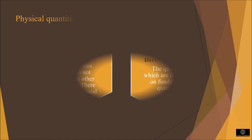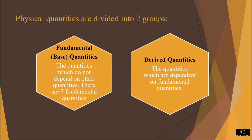Physical quantities are divided into two groups: fundamental quantities and derived quantities. The quantities which do not depend on any other quantities, or the quantities which can be measured by an instrument, are called fundamental or base quantities. There are seven fundamental quantities. The quantities which depend on fundamental quantities, or which can be measured by an instrument and a combination of the base units, are called derived quantities.